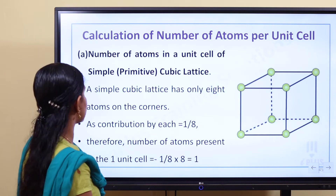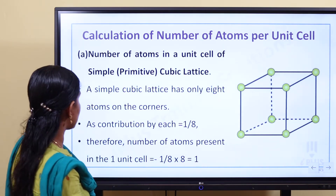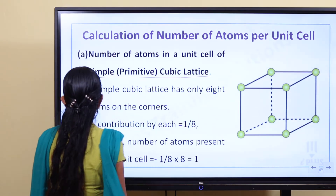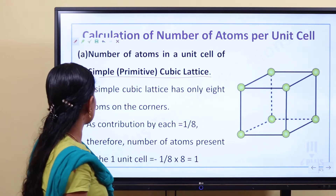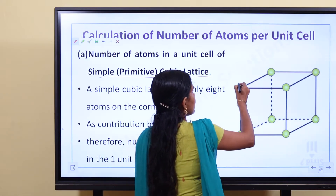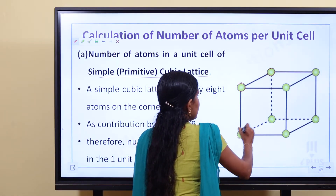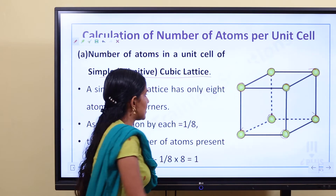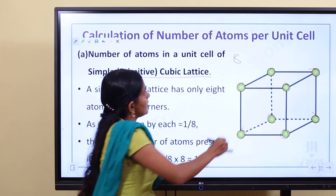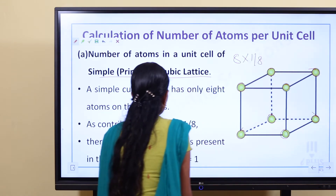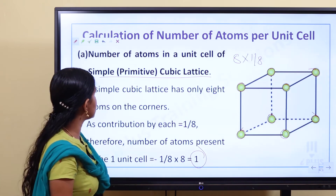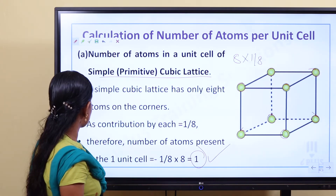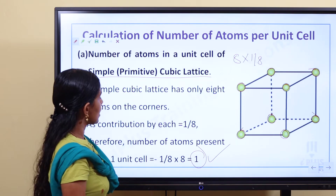Now, calculation of the number of atoms per unit cell. For the simple cubic (primitive cubic) lattice: it has only 8 atoms on the corners. Each corner contributes 1/8, so the total number of atoms present in a simple cubic unit cell is 1/8 into 8 equals 1 atom.